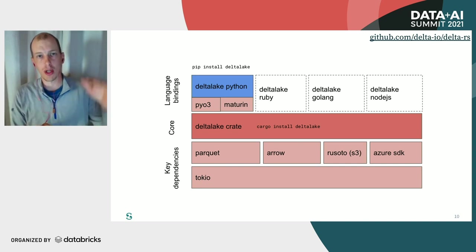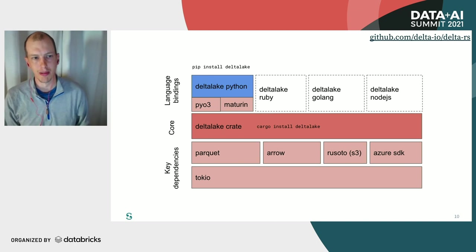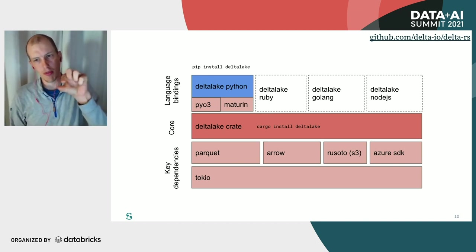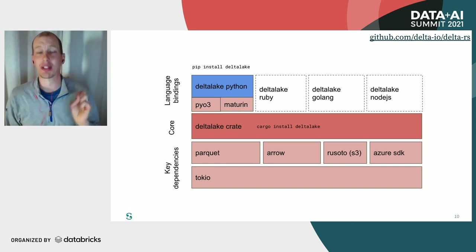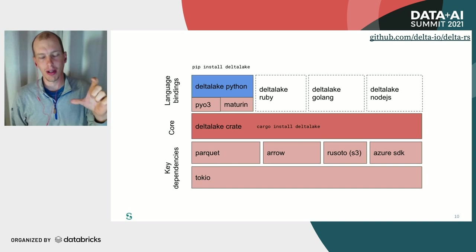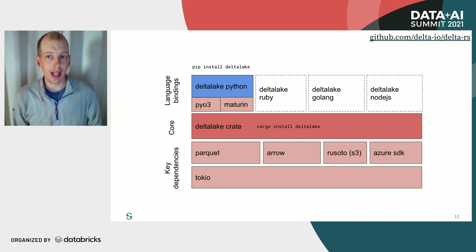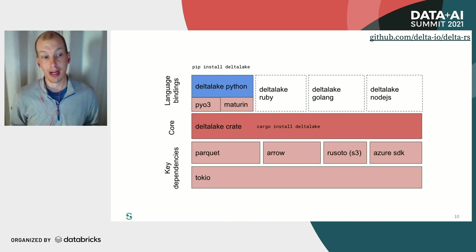That layer is the layer upon which all of the native bindings into Python, Ruby, or Golang can be implemented. There's a really cool library called Maturin, and then PyO3, that make it really easy — I was shocked at how easy it was to create a Python library dependent on Rust code. So you can also get delta-lake Python: just do a pip install delta-lake right now and you can start reading Delta Lake from your Python interpreter right away.